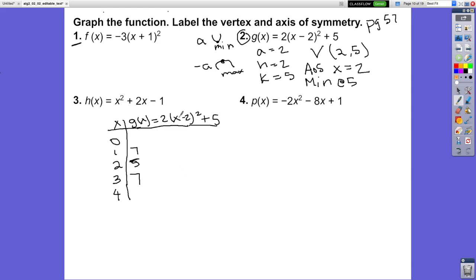Now let's do x = 0: 0 - 2 = -2, (-2)² = 4, 4 × 2 = 8, 8 + 5 = 13. For x = 4: 4 - 2 = 2, 2² = 4, 4 × 2 = 8, 8 + 5 = 13.